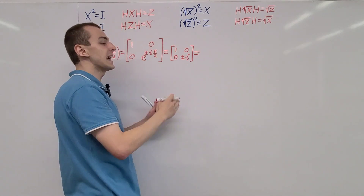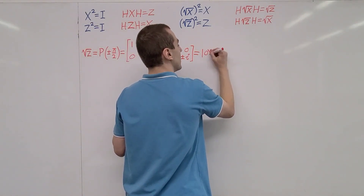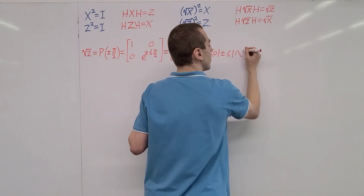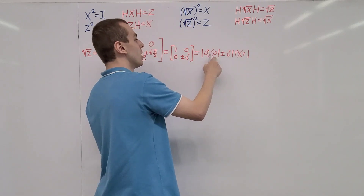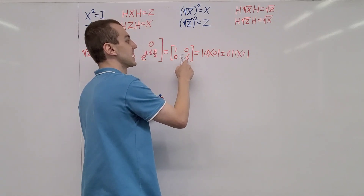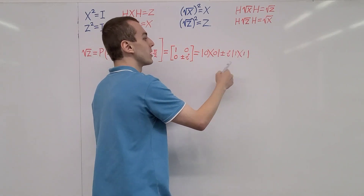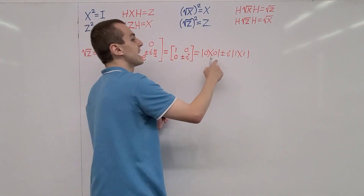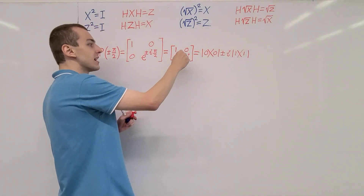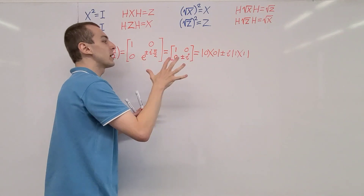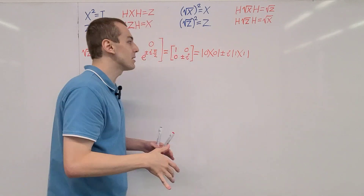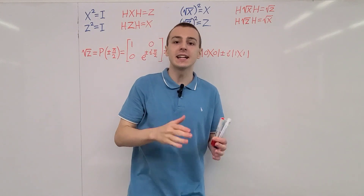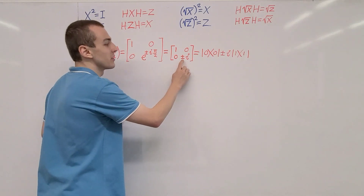We can write this in ket-bra notation: we have ket zero bra zero, and then plus or minus i times ket one bra one. So this zero-zero corresponds to the first diagonal entry, and this one-one corresponds to the second diagonal entry. The mixed terms zero-one and one-zero are zero, so they don't appear. If we take the plus case, we can denote that as the S gate, which is a type of phase shift gate. If we take the Hermitian adjoint of the S gate, we denote that as S-dagger, which corresponds to the minus case with entries 1 and minus i.